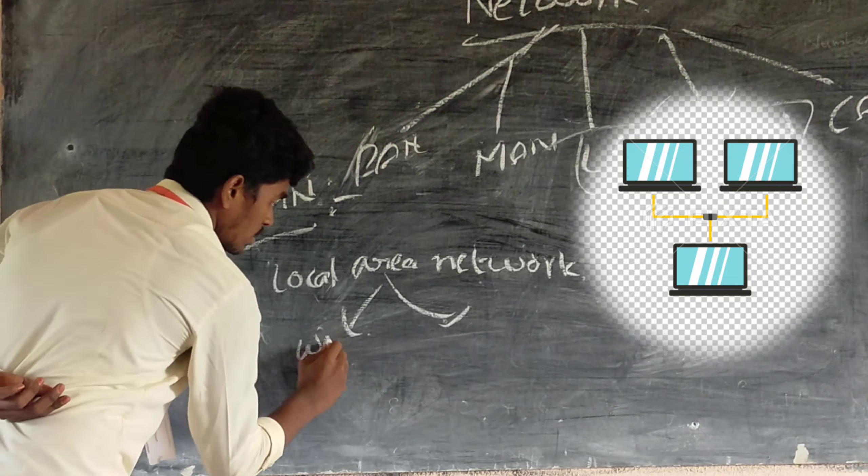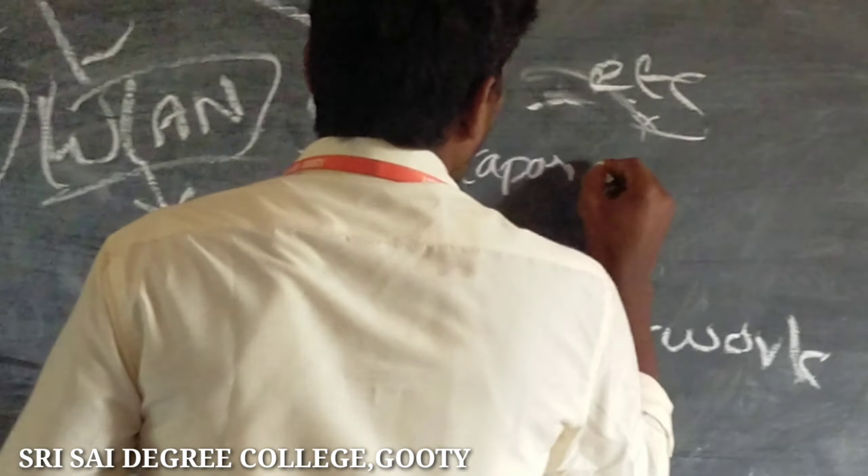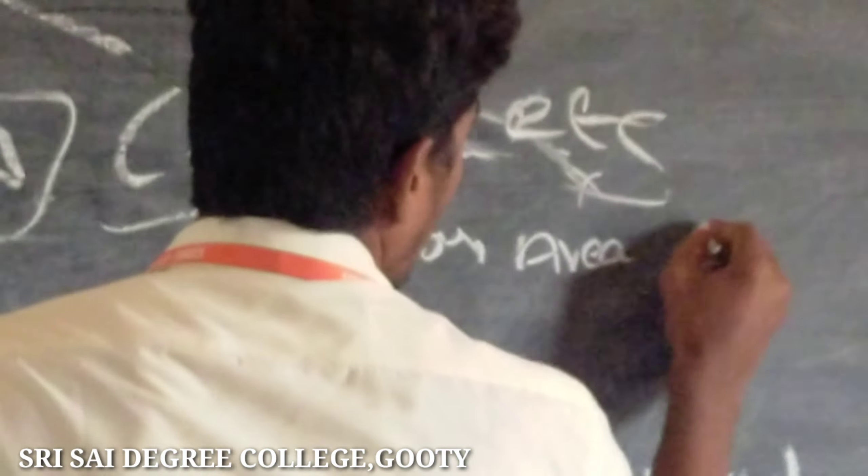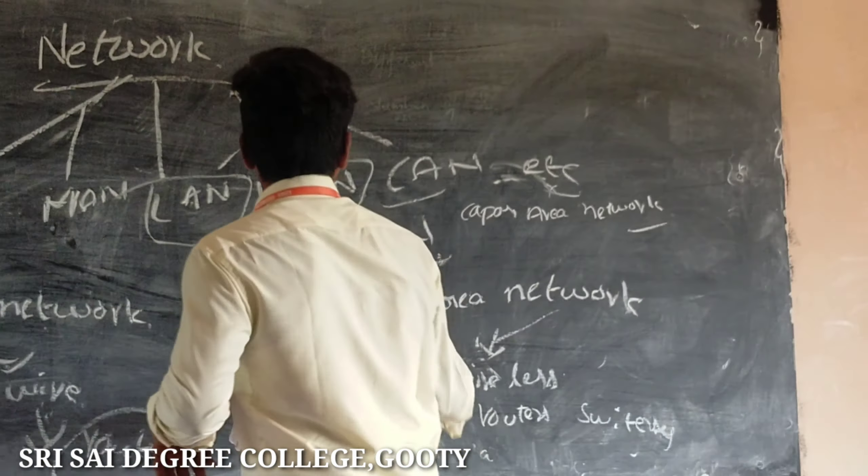PAN is a personal area network, one computer. For example, we can use mouse and keyboard with CPU and computer. This is personal area network. MAN is a metropolitan area network. CAN is a campus area network.